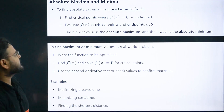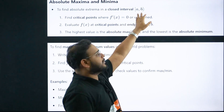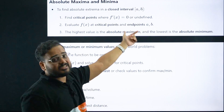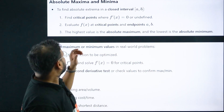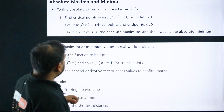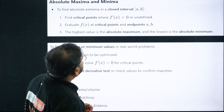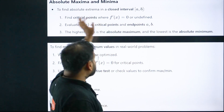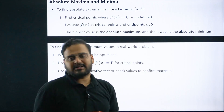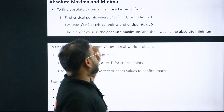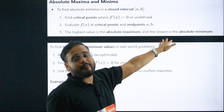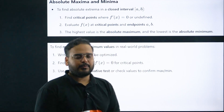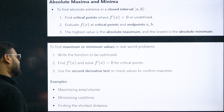For absolute maxima and minima, you must also check the boundary points a and b. Find the value of the function at all critical points and at the endpoints. Whichever point gives the highest value is the absolute maximum; the lowest is the absolute minimum. In AOD, also remember rate-of-change questions — volume change, speed change, acceleration problems — these can also be expected this year.